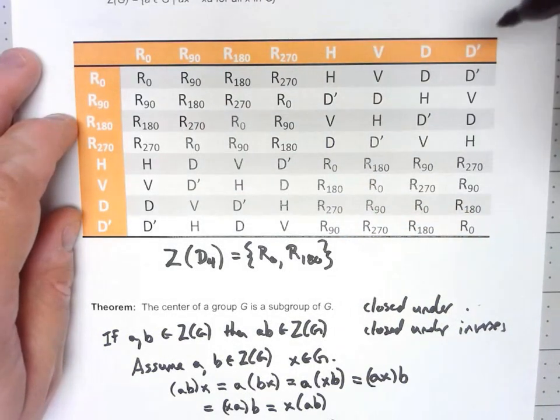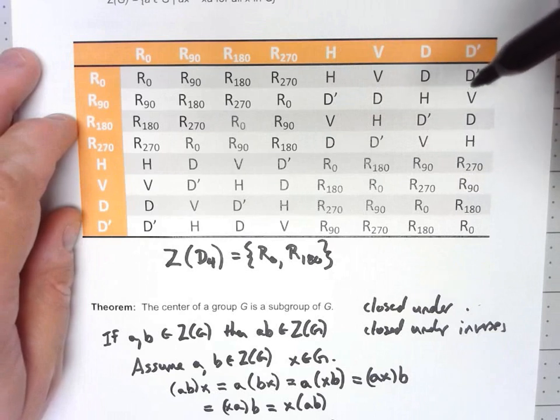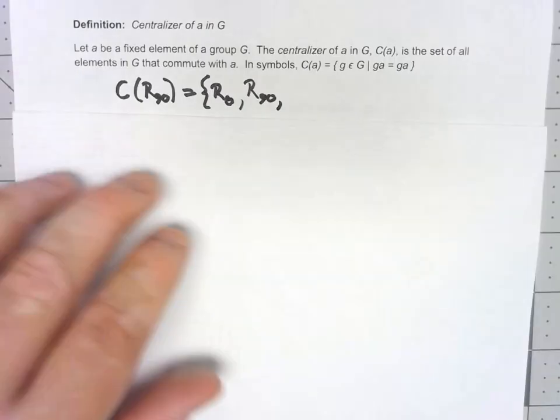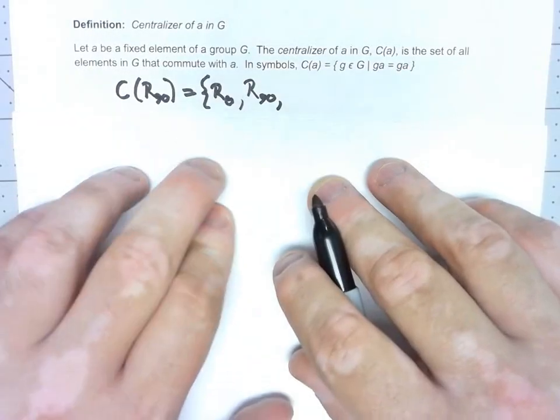R90 times R270 is R0. R270 times R90 is R0. So all the rotations are part of the centralizer of R90.